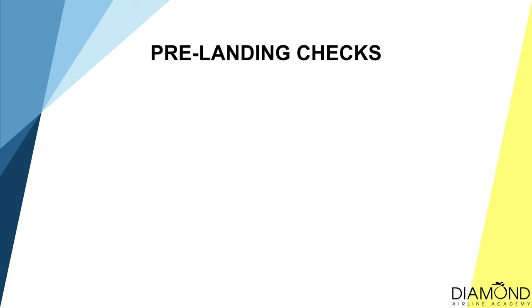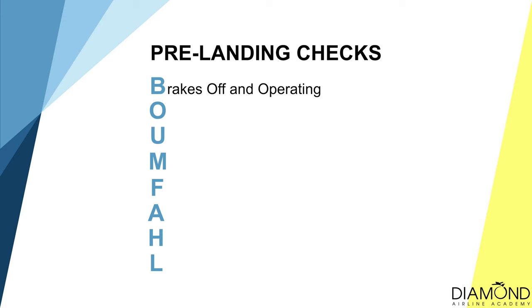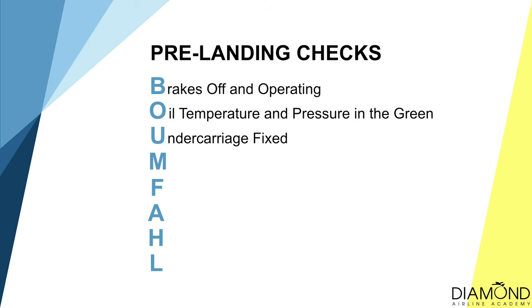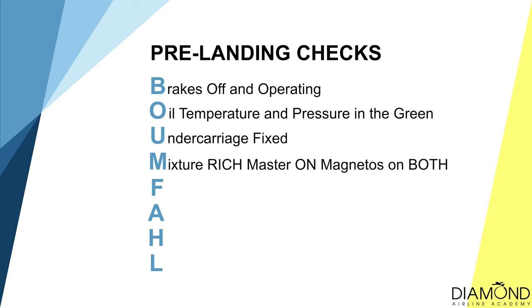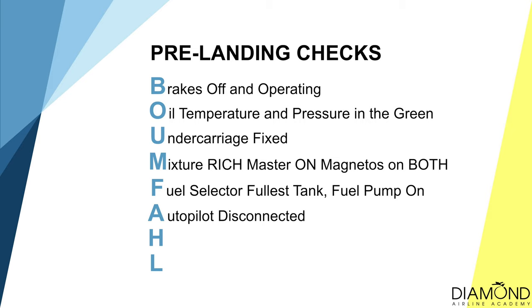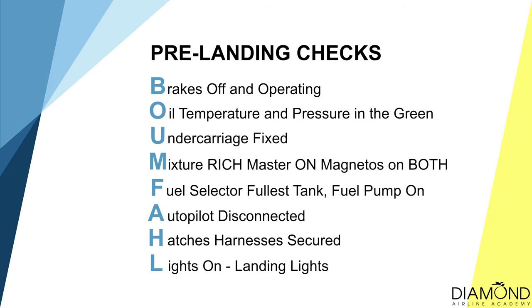After completing HHSS and flying downwind accurately, it's time for the pre-landing checks — BUMFOUL: Brakes off and operating; Oil temperature and pressure in the green; Undercarriage fixed; Mixture rich; Master on; Magnetos on both; Fuel selector on fullest tank; Fuel pump on; Autopilot disconnected; Hatches and harnesses secured; Landing lights on.